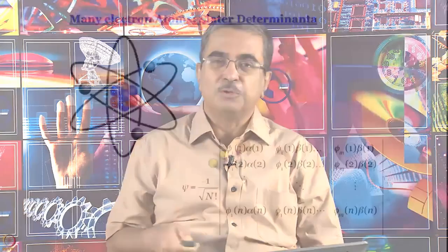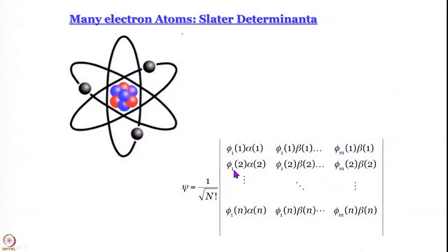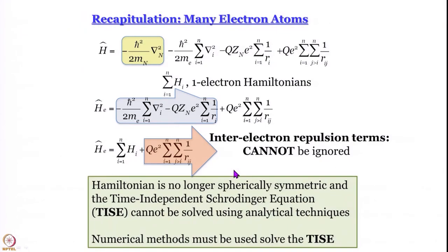We are learning about many-electron atoms. Today we are going to learn how to write their wave functions using a particular form — what are called Slater determinants, which looks sort of like this. But before that, let us recapitulate very quickly what we have studied in the earlier modules.